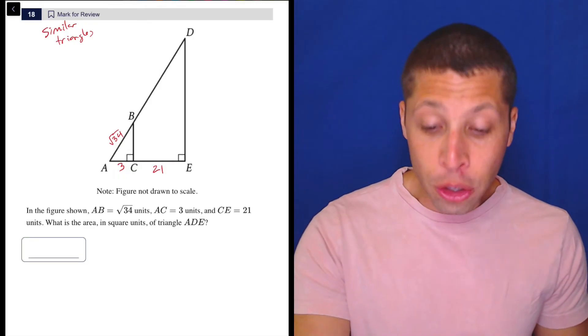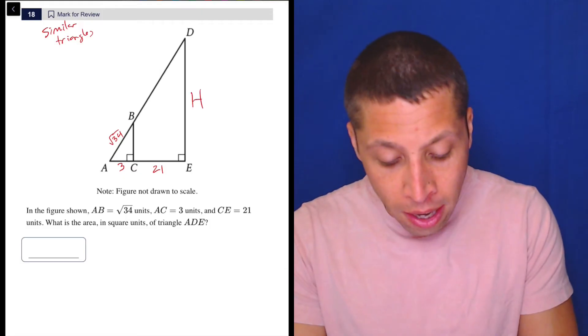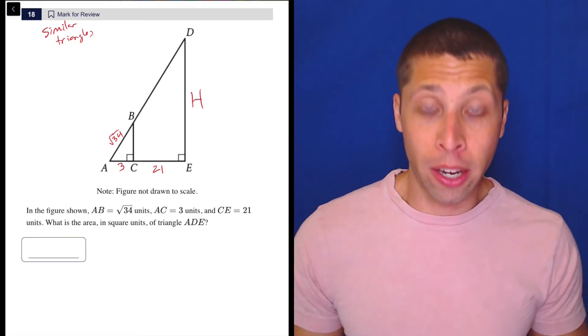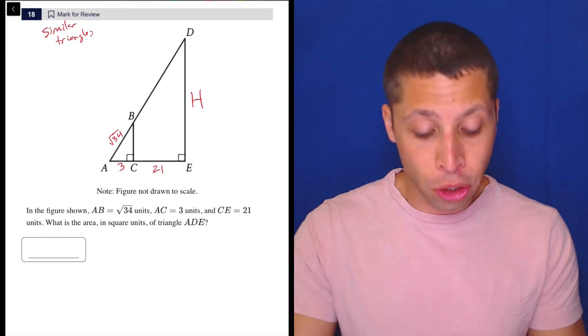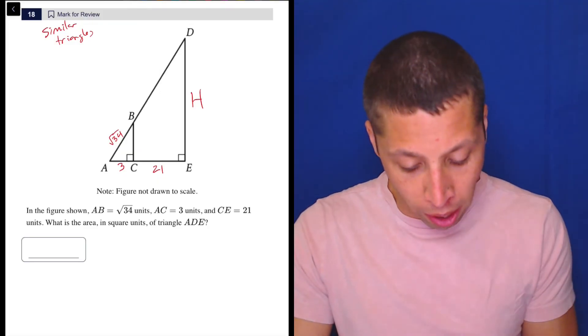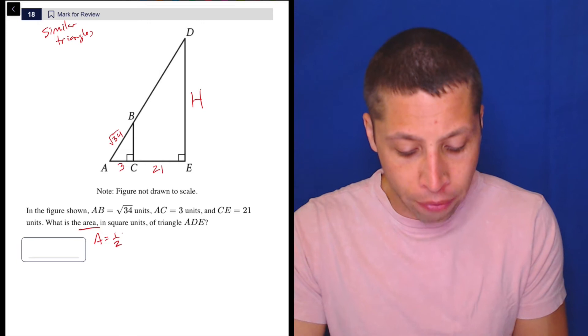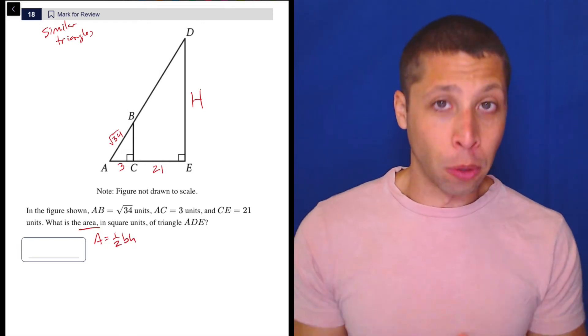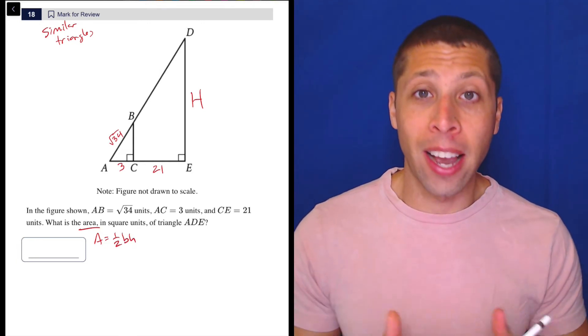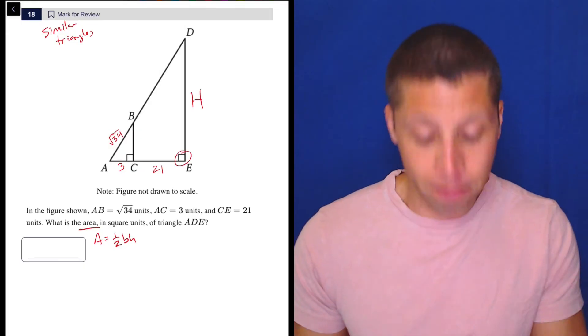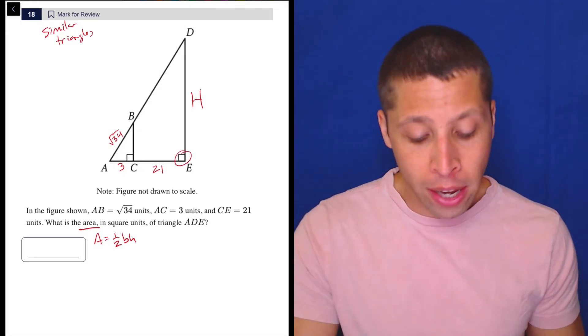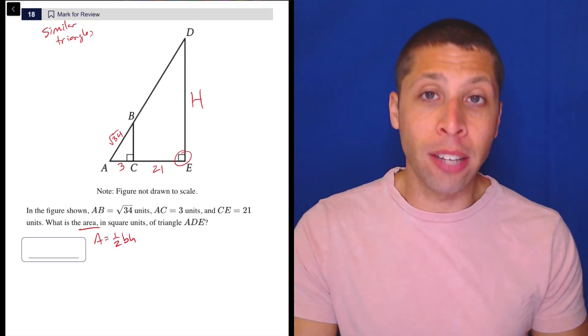So what we need to do is get the height of the big triangle, right? Because if we think about our reference chart, we know that the area of a triangle is one-half base times height. And the requirement for that formula is that the base and the height have to be perpendicular to each other. And perfect. It's the right triangle. They already are. So we need to get that, and we can do that using similar triangles.